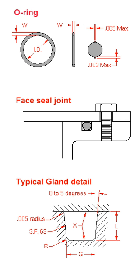An O-ring, also known as a packing or a toric joint, is a mechanical gasket in the shape of a torus. It is a loop of elastomer with a round cross section, designed to be seated in a groove and compressed during assembly between two or more parts, creating a seal at the interface.